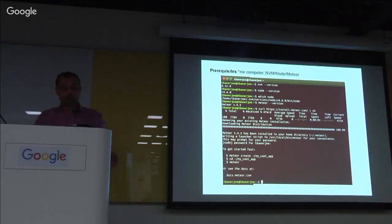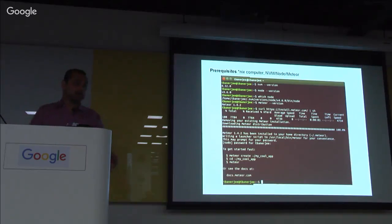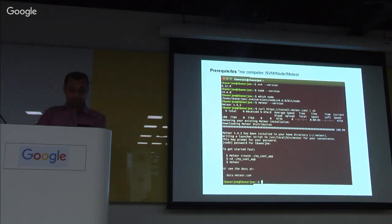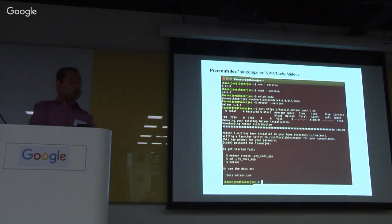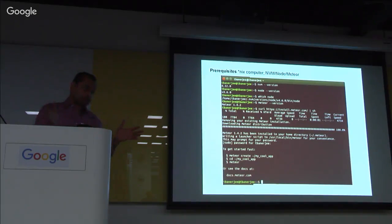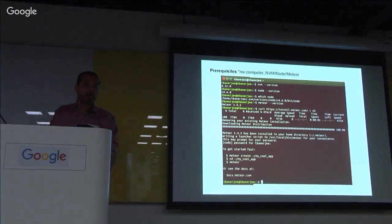Meteor helpfully tells you what to do to get started fast: you run 'meteor create' with an app name and it installs a small, fully working single page application. The screenshot is a couple of weeks old - I chose Node 4.6 as the LTS (long-term supported) version, which has since changed to 6.9. When I did the update I thought something would break, but given how simple what we're doing with Meteor is, it worked straight out of the box.